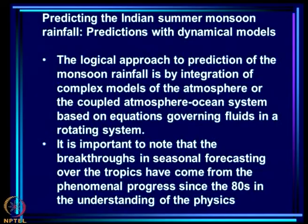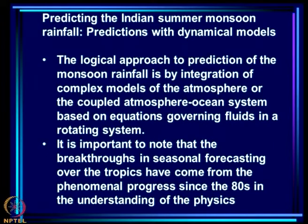Today I am going to continue the topic of monsoon prediction, focusing on prediction with dynamical models — so-called dynamical models which are based on the laws of physics. I am going to talk on predicting the Indian summer monsoon rainfall. We focus on the seasonal time scale, June to September, and the spatial scale is all-India — the average Indian rainfall for June to September for that specific season.